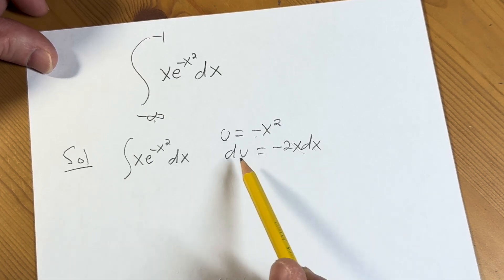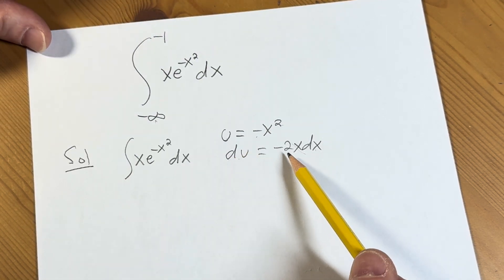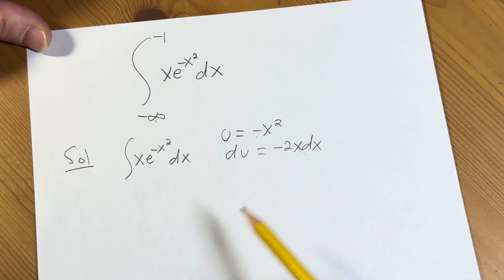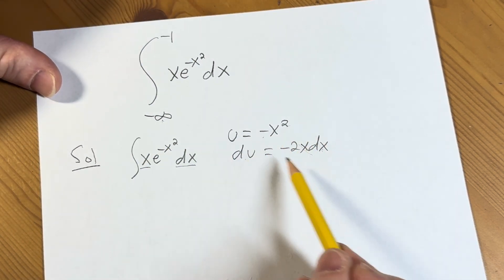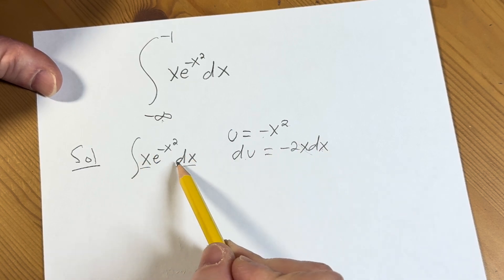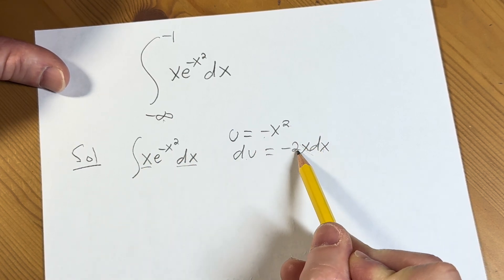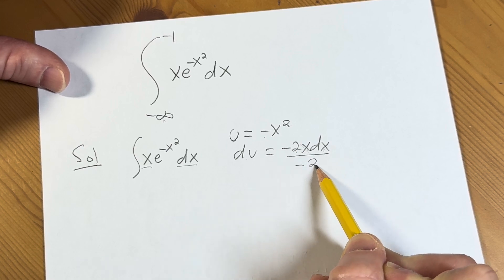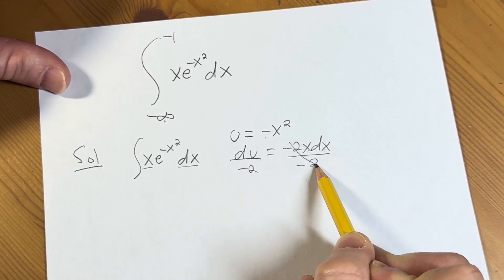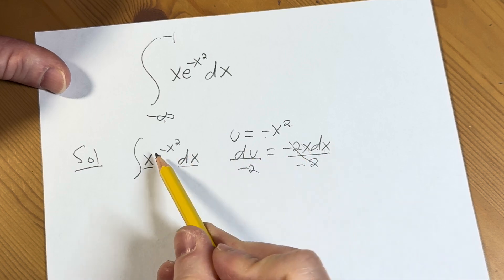All right, so we're trying to make a substitution. You'll notice here that we have minus 2x dx and here we have x dx. The goal here is to make this look like what's in our integrand over here. You'll notice that this has a minus 2 and this doesn't. So what we can do is divide both sides by negative 2.